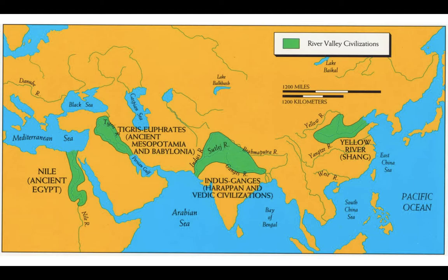Just to give you some context, the other green areas you see on your map to the far left in Egypt, then in what would be known as Mesopotamia in the Tigris and Euphrates River Valley, and then in the far right in China in the Yellow and Yangtze River Valleys — those would also be early civilizations, or what we call early River Valley civilizations. But since we're starting with the unit on South Asia, we're going to be focusing on the center.